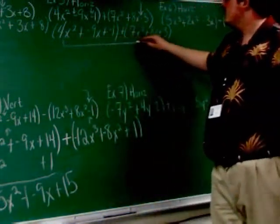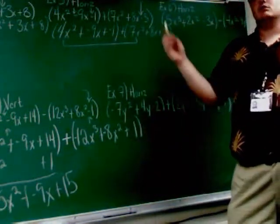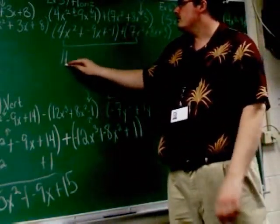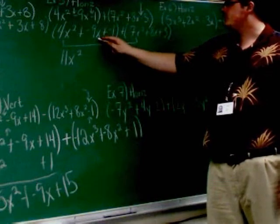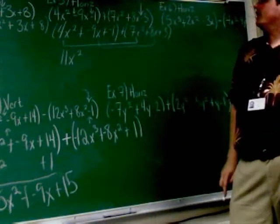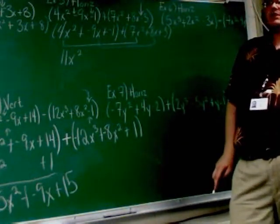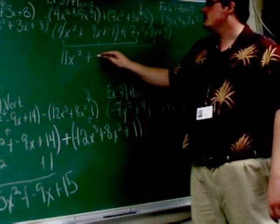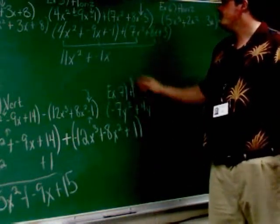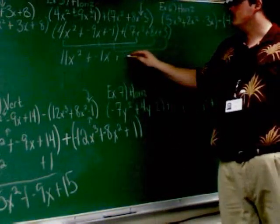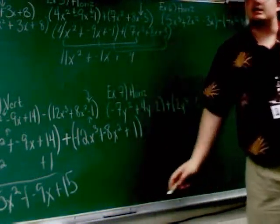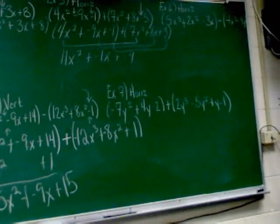So 4x squared and 7x squared are like terms. So those two are going to get put together, 11x squared. Negative 9x and 8x are going to get put together. Okay, that's negative 1x. Negative 1 and negative 3 are going to put together, negative 4. And that's it. It's the same thing we just did, we just don't take the time to write it this way.